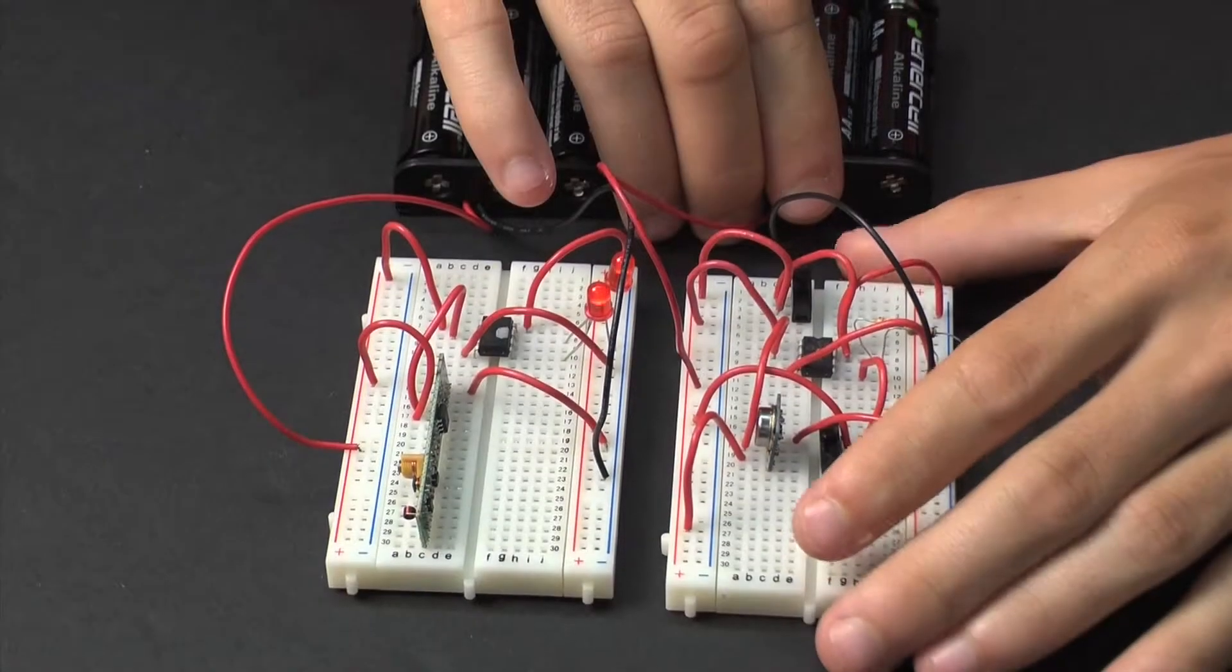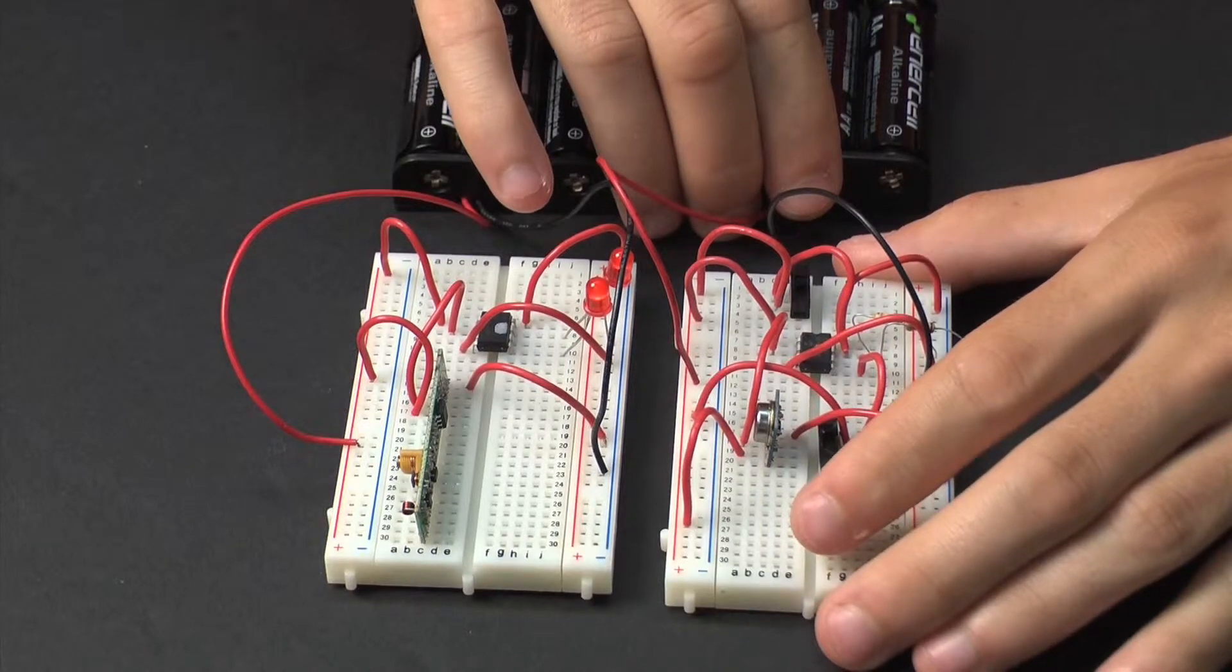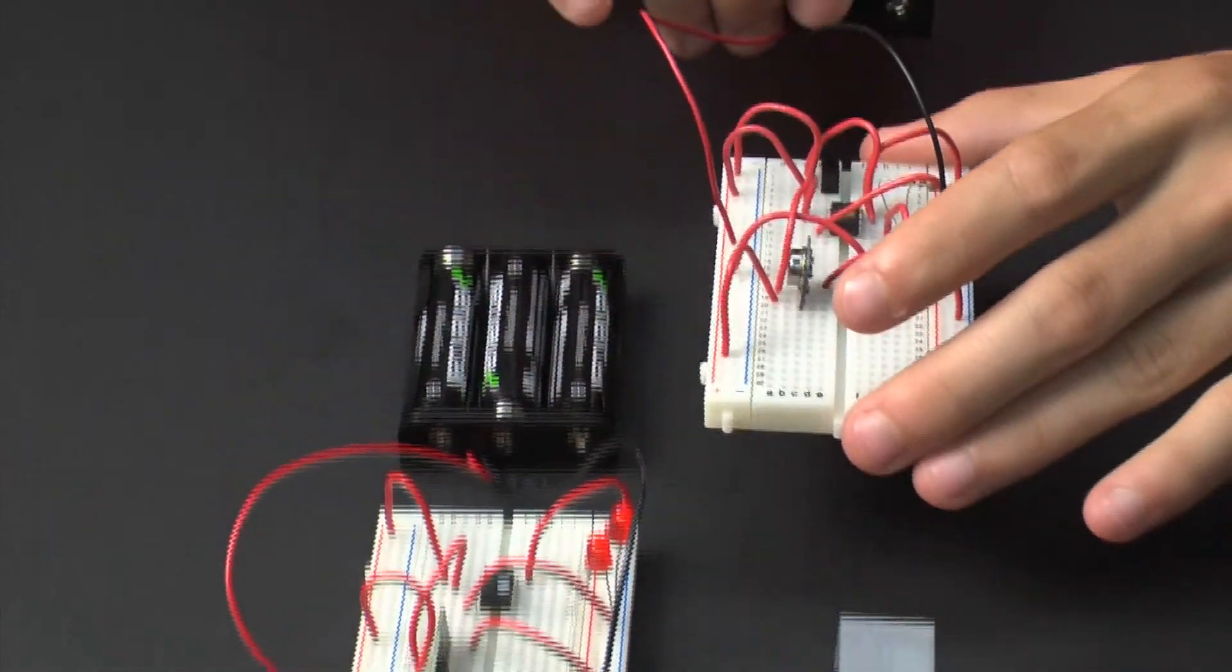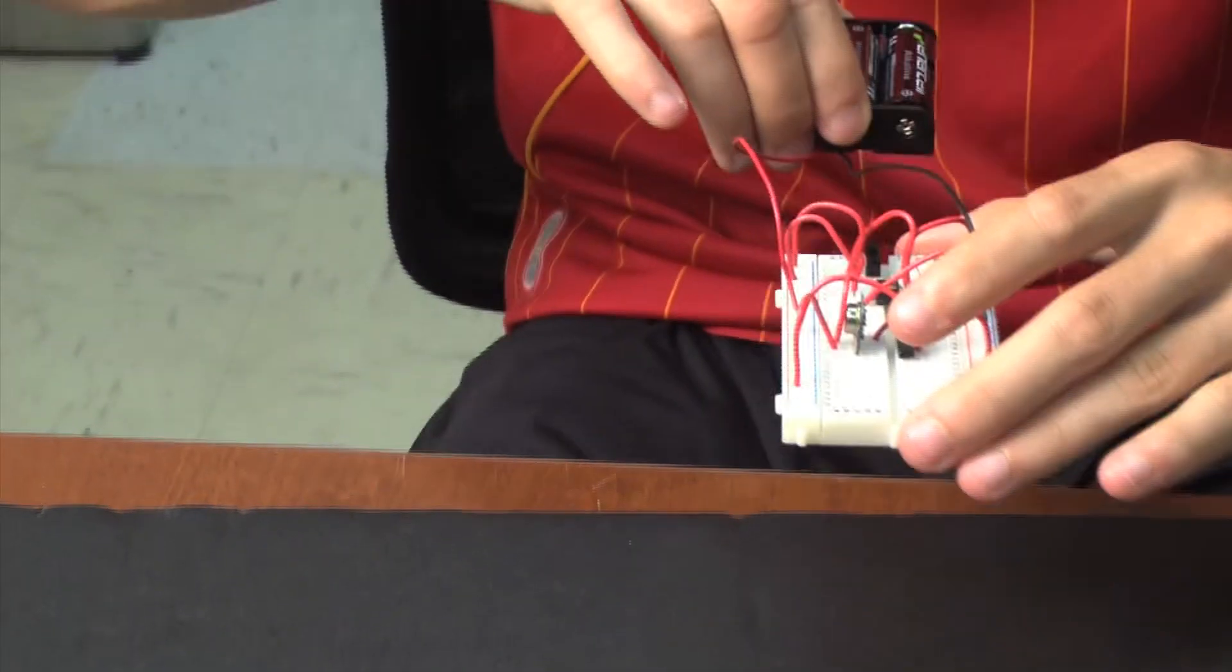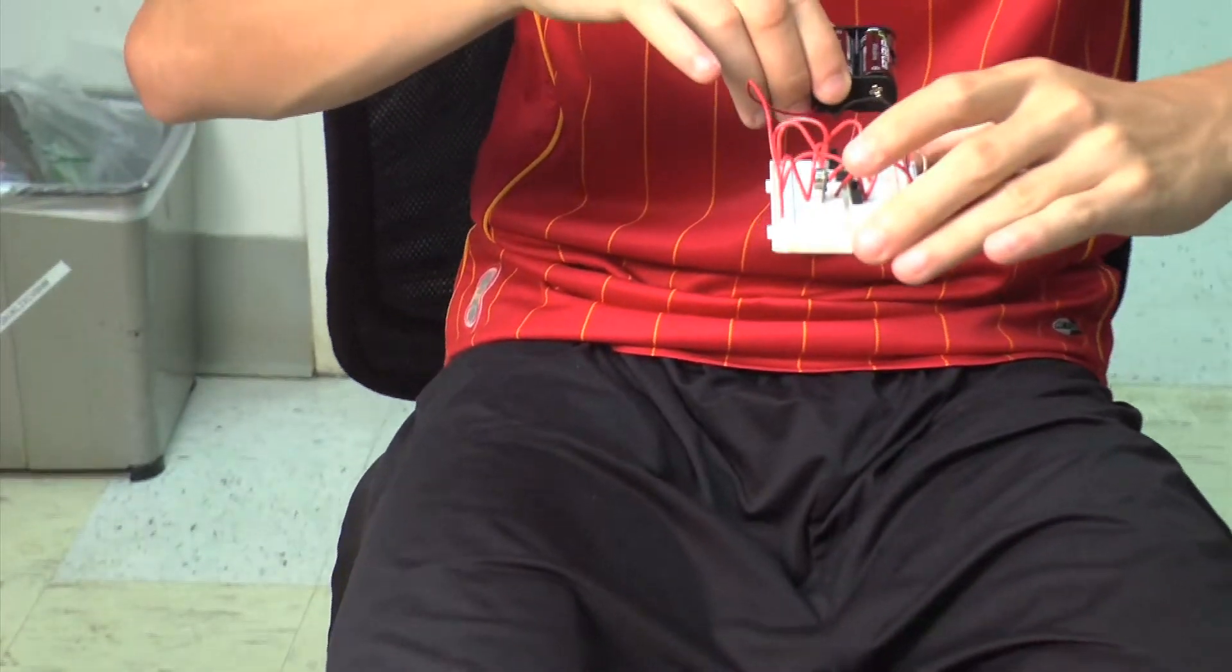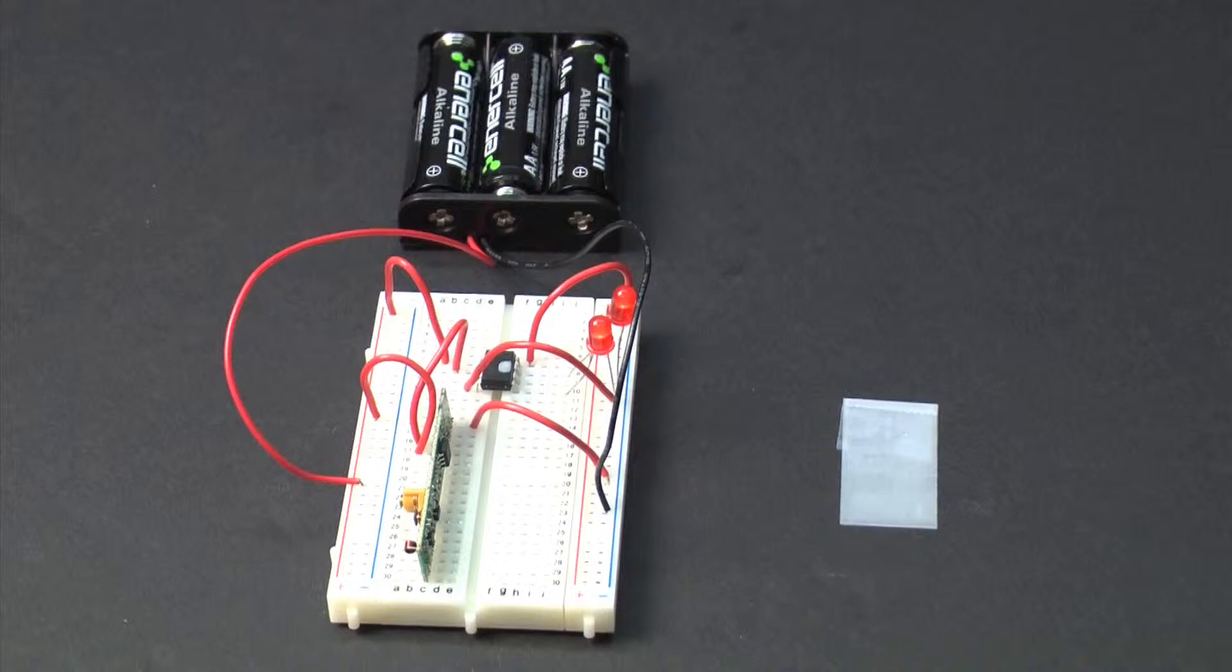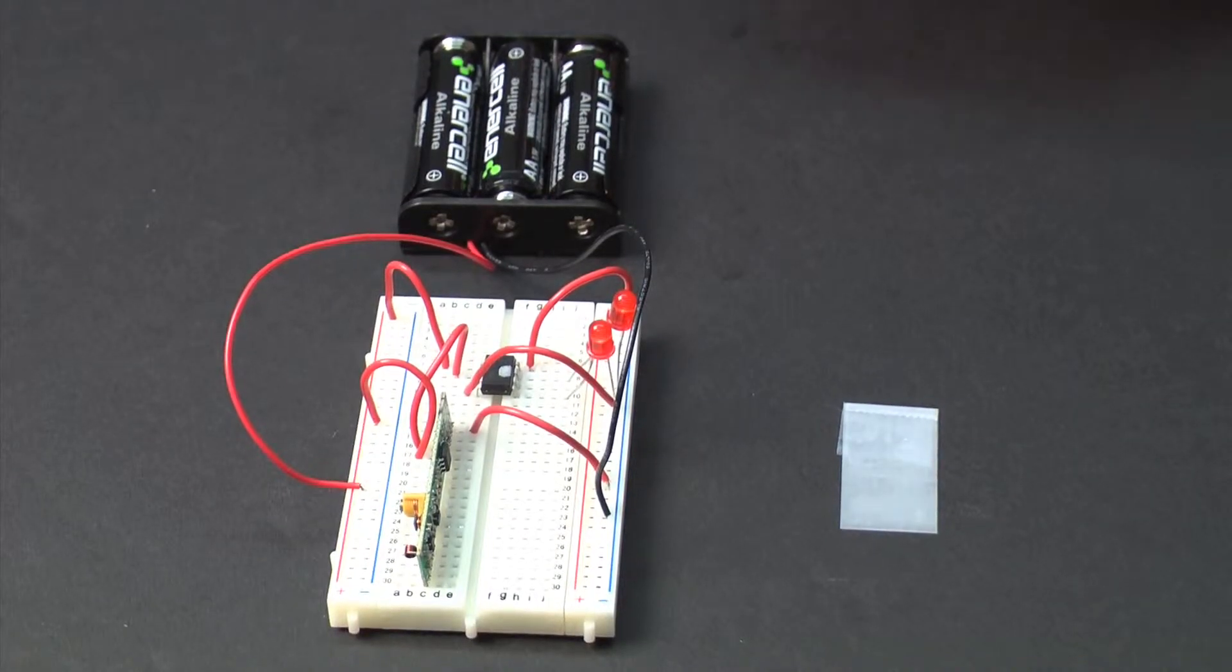We will now demonstrate how far the receiver and the transmitter can be separated without losing connection. The receiver and the transmitter cannot be separated very much without losing connection.